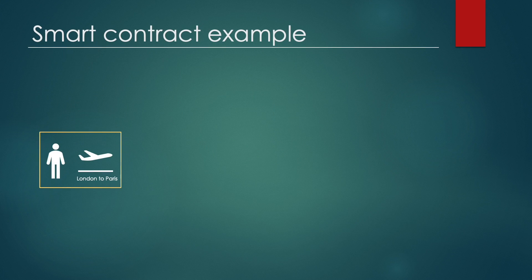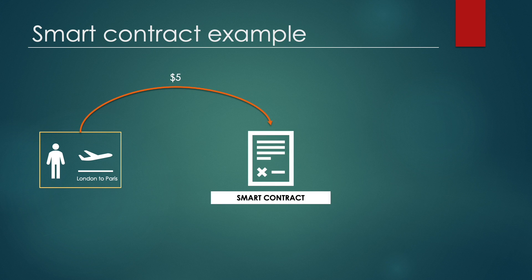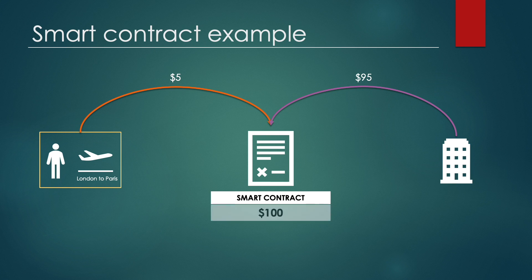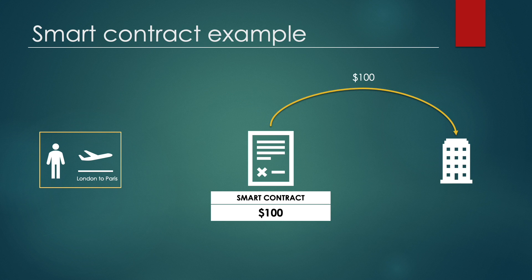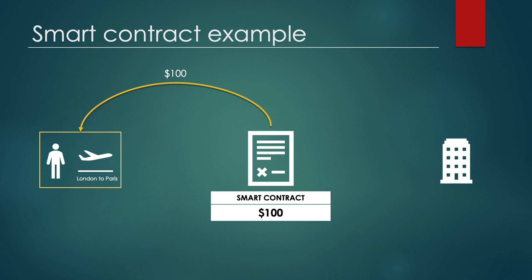Let's take a look at an example of a smart contract in the insurance industry. Let's assume that Adam takes flight insurance and he is about to fly from London to Paris. He sends five dollars worth of cryptocurrency to an ABC Insurance smart contract and provides his flight number. ABC Insurance sends $95 to the same smart contract, so there is $100 in total. If Adam's flight is on time, ABC Insurance is sent $100 from the smart contract, but if the plane is late, $100 is sent to Adam.